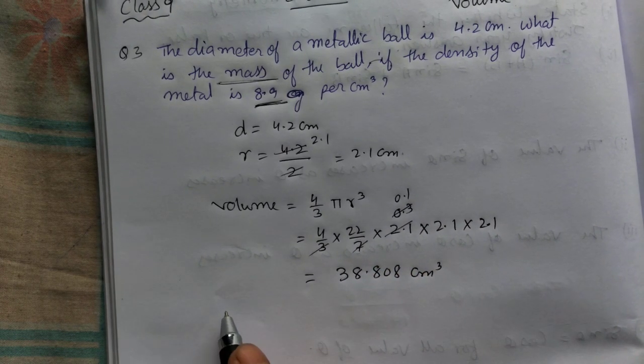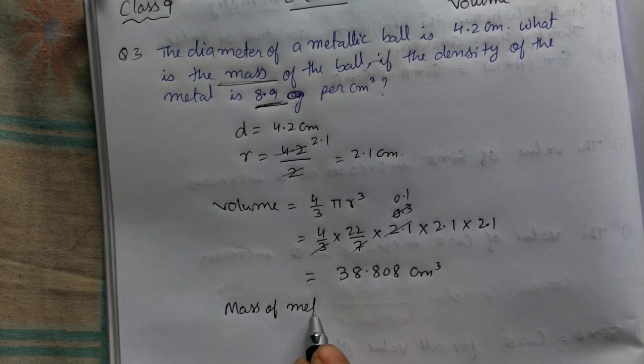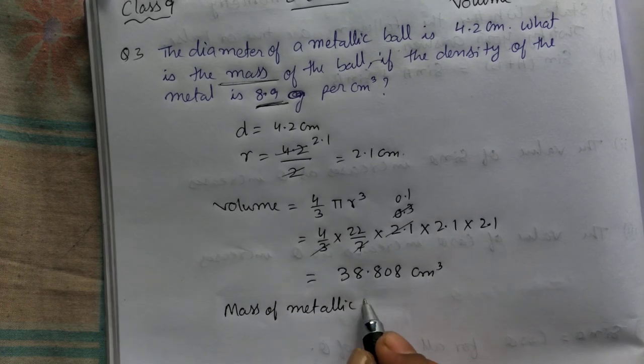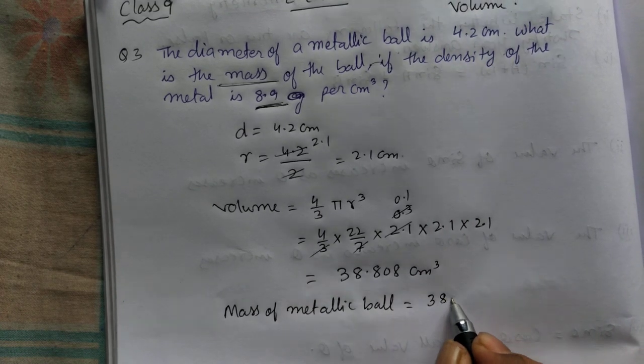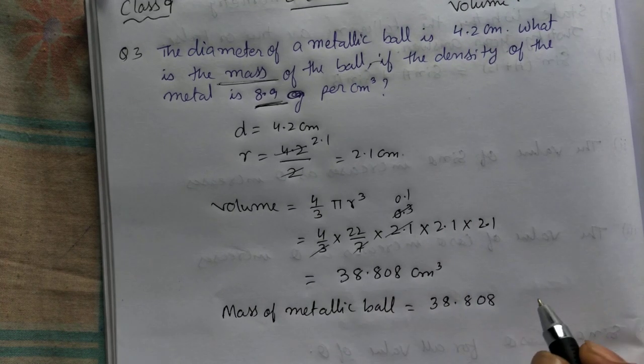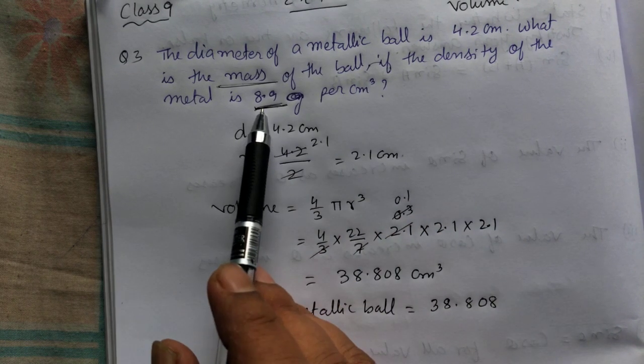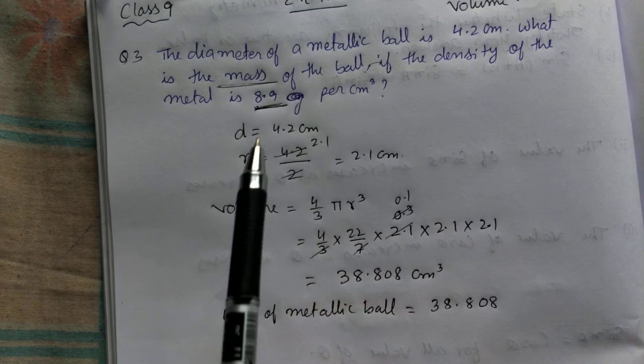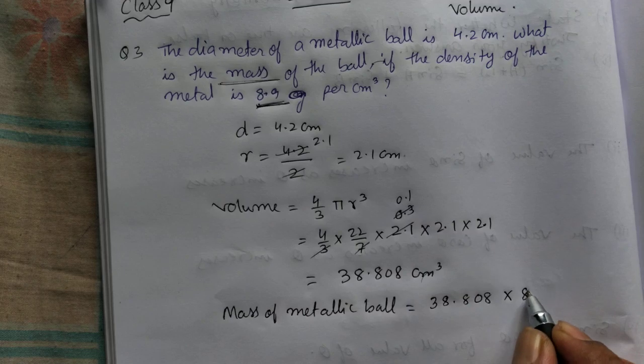Once you get the volume, to find the mass you have to multiply the volume by this value. Density is 8.9 grams per centimeter cube. So you've got this much centimeter cube, you'll multiply by 8.9.